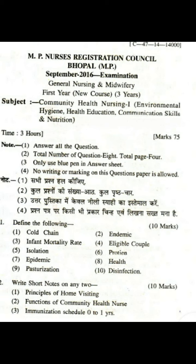Subject: Community Health Nursing First. Topics include environmental hygiene, health education, communication skills, and nutrition. Timing: three hours. Maximum marks: 75. Note: Answer all the questions. Total number of questions is eight. Total pages: four. Use blue pen in answer sheet. No writing or marking on the question paper is allowed.